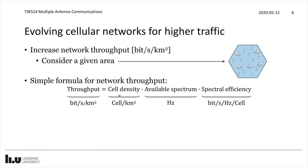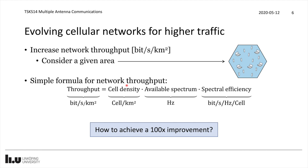Suppose we would like to build a technology that delivers a 100 times improvement. We need to increase the throughput by 100 times, and we have different factors to play with. We can achieve that by having 100 times higher cell density, or 100 times more spectrum, or 100 times more spectral efficiency. But it's usually much more efficient to have all three factors playing a role — for example, 5 times higher cell density, 2 times higher spectrum, and 10 times more spectral efficiency, which multiplies up to 100 times.